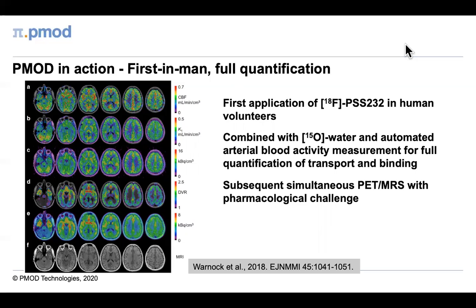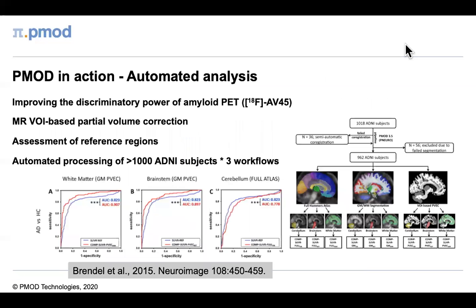Our speciality over the years has been fully quantitative PET in the brain. In a study at the University Hospital in Zurich, we combined the first-in-man study of a fluorinated mGluR5 tracer with quantitative blood flow using oxygen-15 water and arterial blood sampling, using PMOD to characterise tracer extraction and separate transport and binding via kinetic modelling and parametric mapping. Our neuro tool automates brain studies including brain atlases, templates, partial volume correction, and parametric mapping. In a study from the University of Munich, PNEURO processed more than 1,000 subjects from the ADNI database with a success rate above 95%, optimising the reference region for amyloid assessment and demonstrating the utility of partial volume correction.